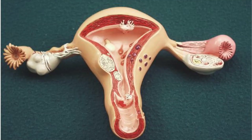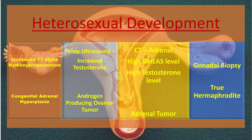For diagnosing heterosexual development, the first test is 17-hydroxyprogesterone — if that level is high, it indicates congenital adrenal hyperplasia. With pelvic ultrasound, increased testosterone indicates an androgen-producing ovarian tumor. If CT scan shows an adrenal tumor along with high DHEA and high testosterone levels, that indicates an adrenal tumor. Gonadal biopsy is helpful to diagnose true hermaphrodites.